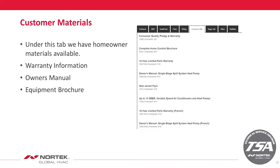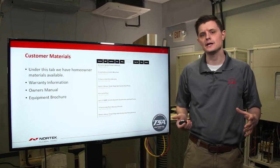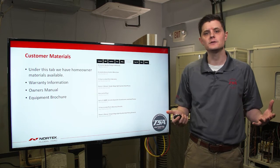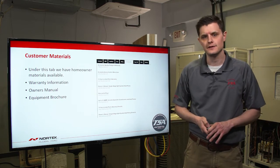Another item is consumer materials. This tab will be on that specific piece of equipment in our tech literature library, whether you're working on a furnace or an air conditioner. Under this tab, you'll find warranty information, owner's manuals, and equipment brochures. Make sure you relay this information to your contractors in the field.